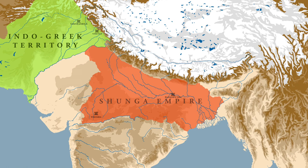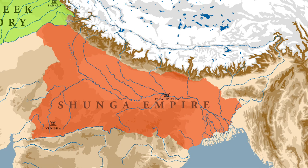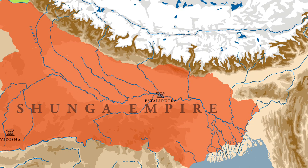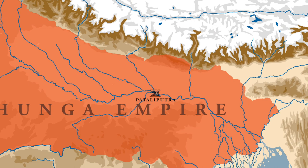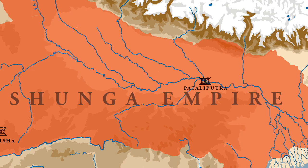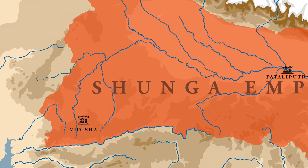When Pushyamitra Shunga seized the throne and became king, his empire was relatively smaller than the Mauryan empire. In this empire, there were two important cities. The first was Patliputra, the ancestral capital of the Mauryas, where Pushyamitra Shunga used to reside. The second important city in the Shunga realm was Vidisha, where the crown prince Agnimitra used to reside.